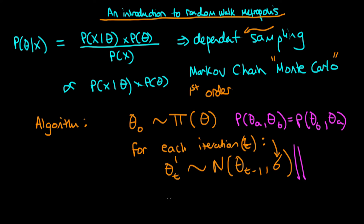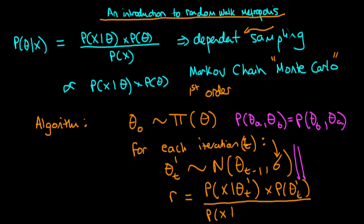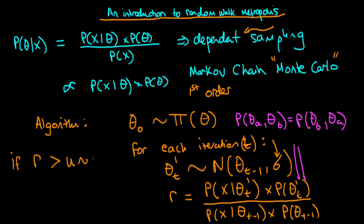Then we calculate a ratio r, which is the value of the unnormalized posterior at theta t primed — that's the likelihood p of x given theta t primed times the prior density at theta t primed — divided by the unnormalized posterior at our previous position theta t minus 1. We then use this ratio r to determine whether we move to the proposed new location or sample again from our current location. The ratio r dictates the probability of moving, and we compare it with a random sample from a uniform distribution on 0 and 1.